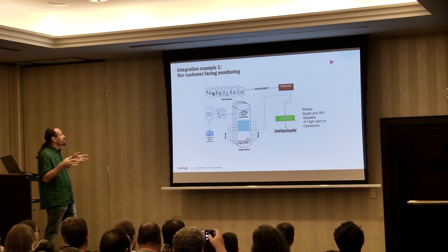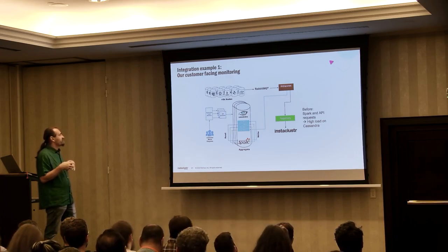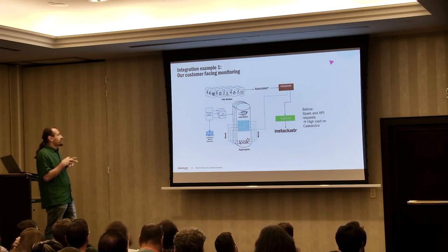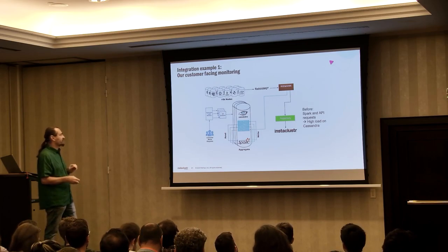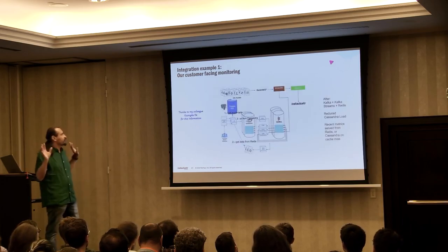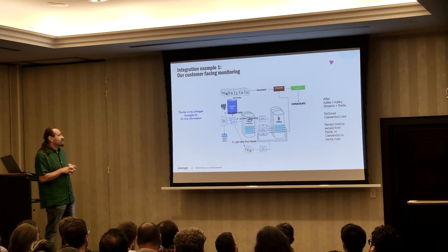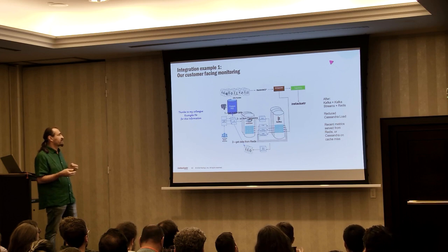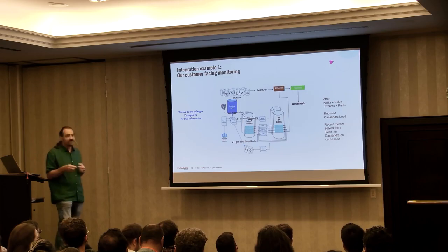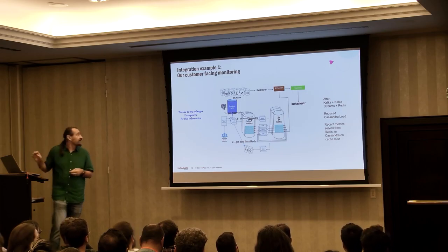Here's an example from our internal team — our customer-facing monitoring architecture. We monitor all our clusters, put data into Cassandra, and allow customers to query against Cassandra metrics. As we got more and more clusters and customers we had to change the architecture because we were getting too much load on the Cassandra cluster. We introduced Kafka, Kafka Streams, and Redis — using Redis as a cache in front of Cassandra so clients hit the Redis cache before hitting the Cassandra cluster.